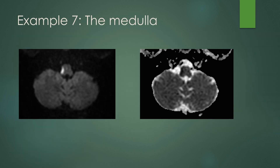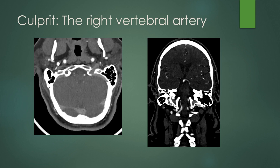Example seven is the medulla. You can have an area of restricted diffusion in the lateral medulla — bright on DWI, dark on ADC. CT is not shown because it is very difficult to see on CT. On vascular imaging, there is severe stenosis of the right V4 segment; you can see the V3 segment going to the V4 intracranially, then an abrupt caliber change of that right vertebral artery, which was the cause of a lateral medullary infarct.